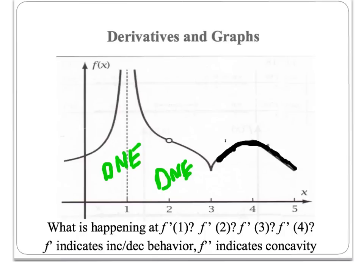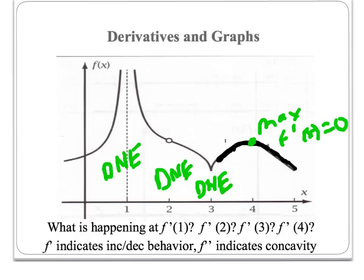At f prime of 3, remember this is a cusp, so again this is another situation that does not exist, even though the function itself is continuous. At f prime of 4, this is a maximum, so this is a situation where the derivative would have to equal 0, because there would be a horizontal tangent line.